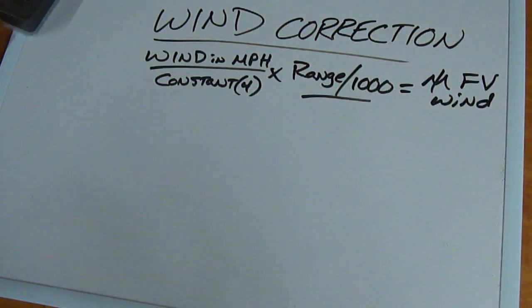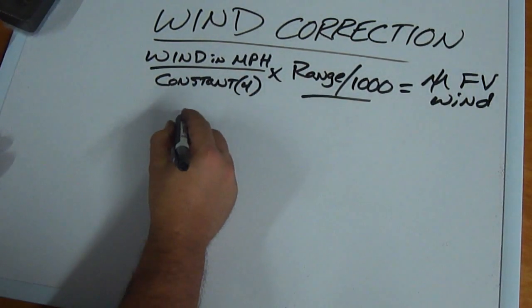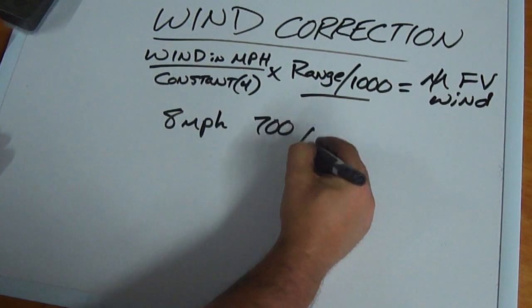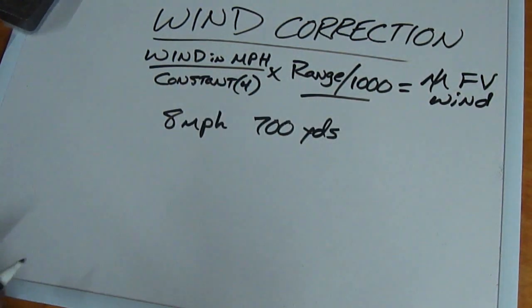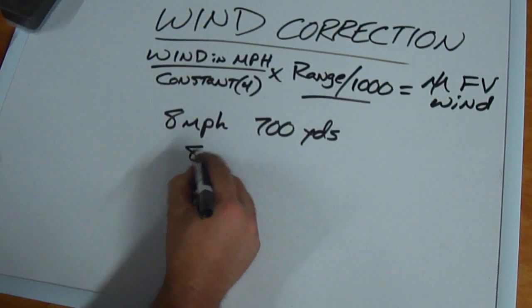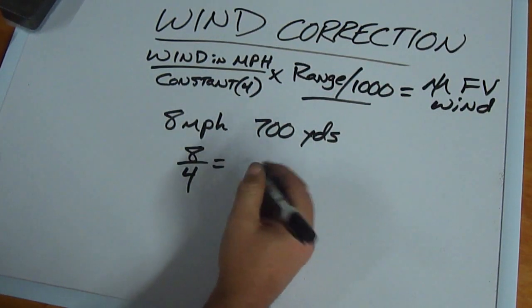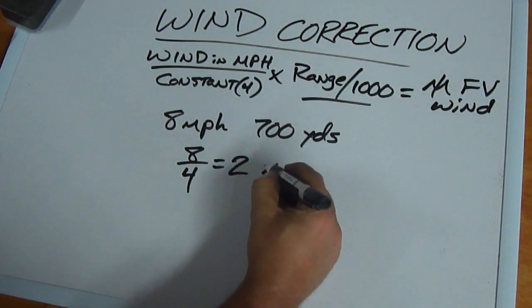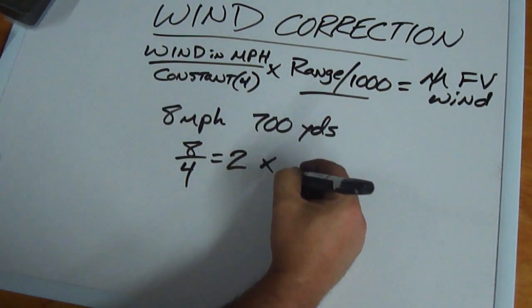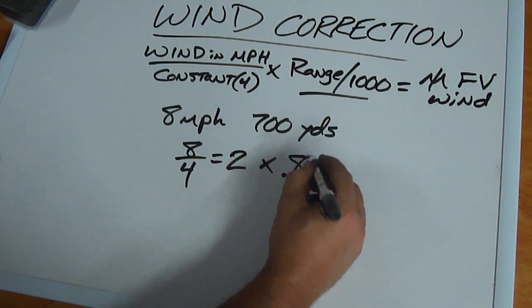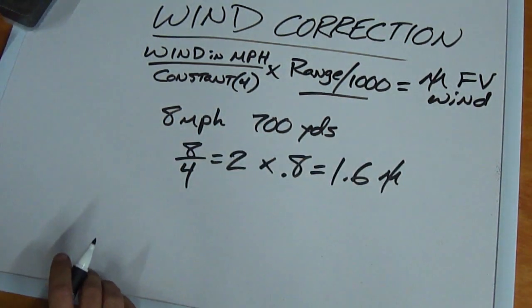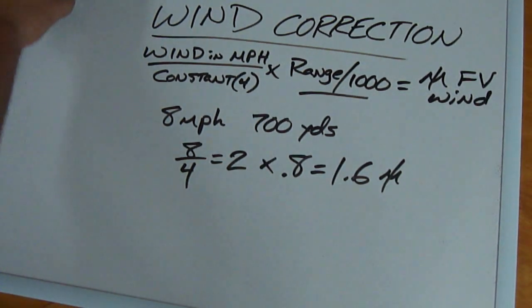Let's change our range here a little bit. Let's say we've got an eight mile an hour wind at 700 yards. We're still doing full value. Eight divided by four equals two times our range divided by a thousand. Now remember, 700 yards and beyond, we're going to add .1 to that, so we're going to say .8. Two times .8 equals 1.6 mils full value wind. It's as simple as that.